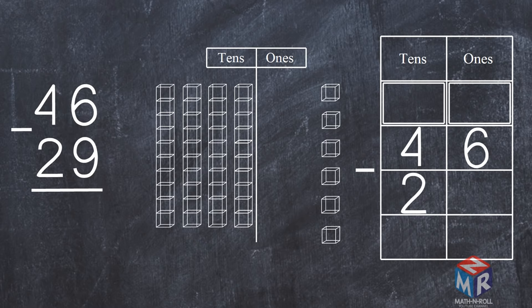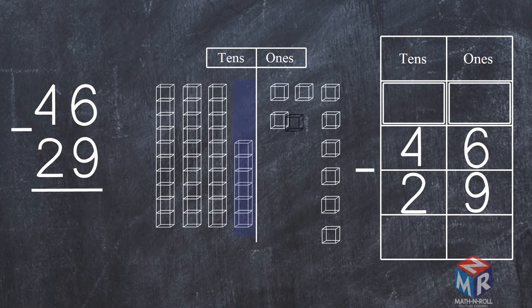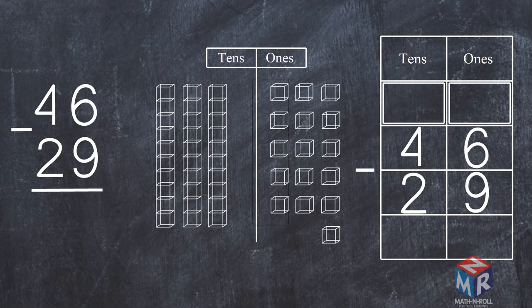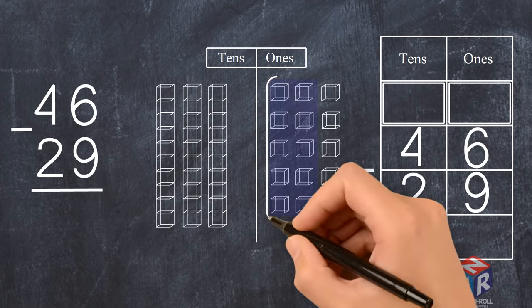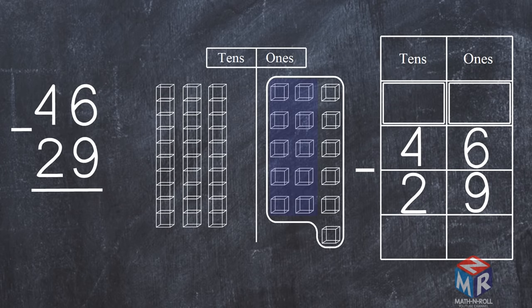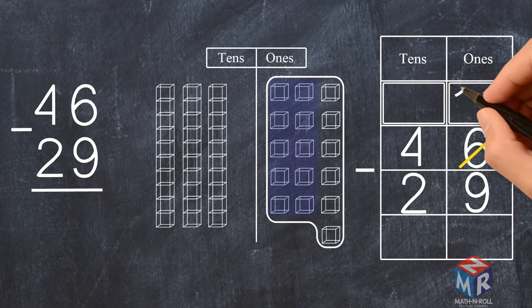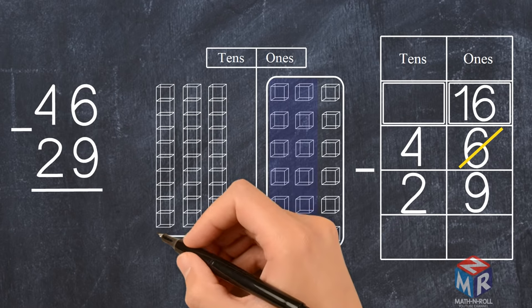9 is greater than 6, so we cannot subtract it. So we regroup one tens into 10 ones. Now we have 16 ones. We cross out 6 from the ones place, and we write 16 instead.